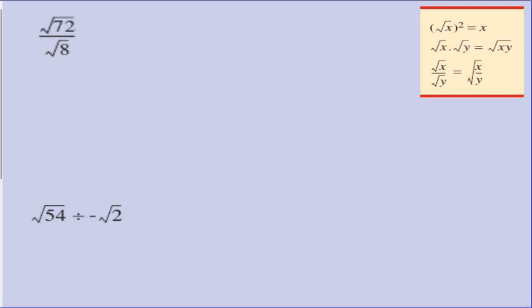Moving on to the division. Now the steps pretty much stay the same. It's always whole numbers by whole numbers, and surds by surds. As you can see in our little rule, we can join our surds together. So in terms of our first one, the square root of 72 divided by the square root of 8.